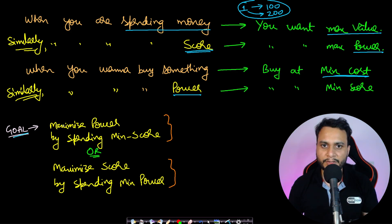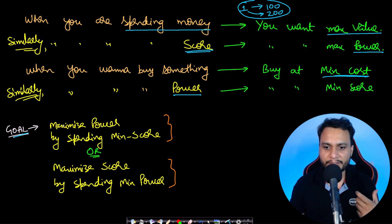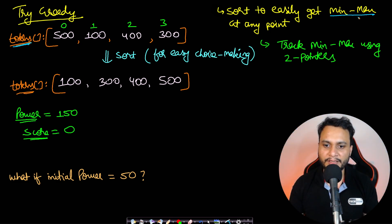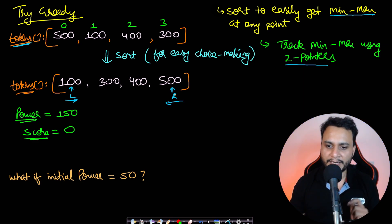To track min and max values efficiently, sort the tokens array in ascending order. Then use two pointers: a left pointer moving left-to-right always pointing to the minimum unused token, and a right pointer moving right-to-left always pointing to the maximum unused token. Since a token can't be used multiple times, two pointers let us greedily access min and max in O(1) at any time.